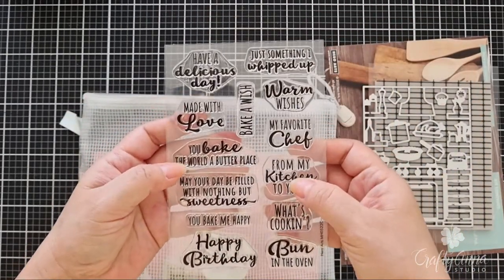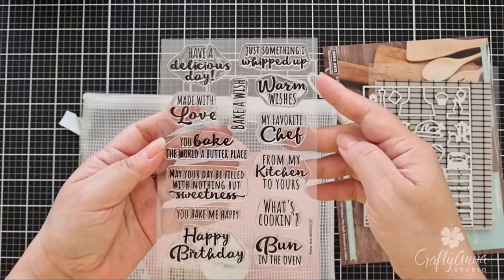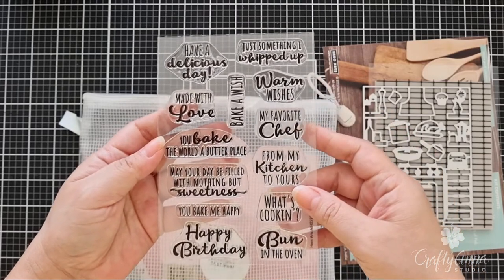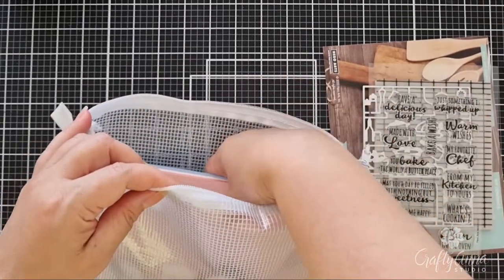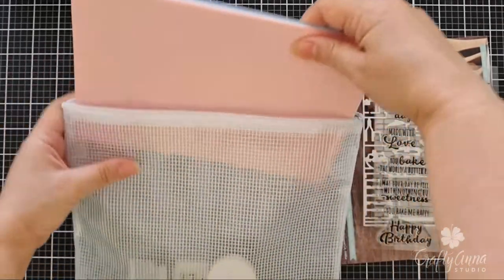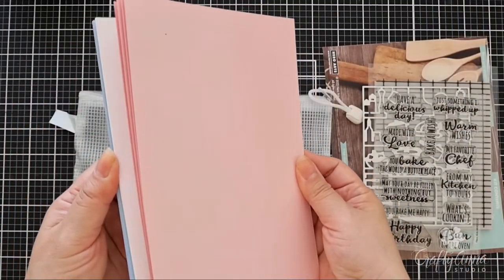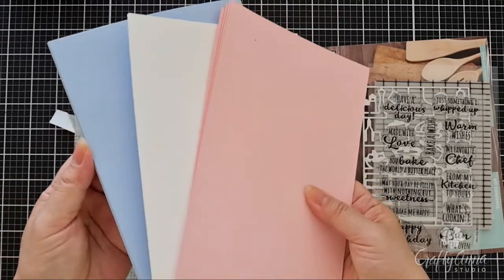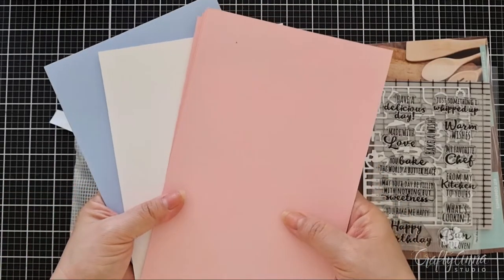It also comes with a stamp set with lots of food theme sentiments and puns like made with love, have a delicious day, and bun in the oven. This kit also comes with 12 panels of cardstock measuring 5 1⁄2 by 8 1⁄2 in pink, white, and blue.